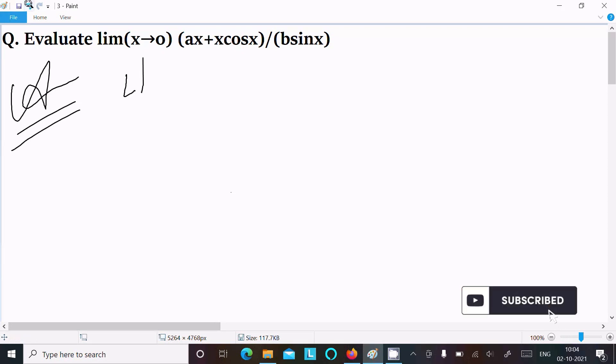So first, we're writing the given limit: lim as x tends to 0 of (ax + x cos x) divided by (b sin x).